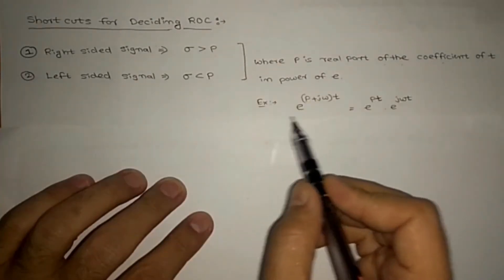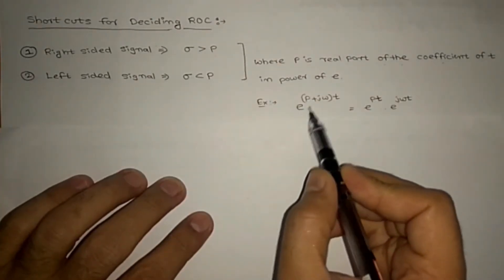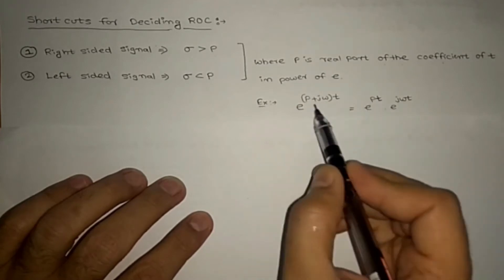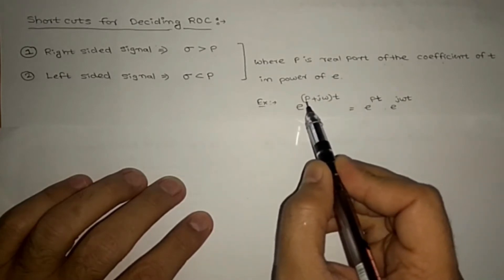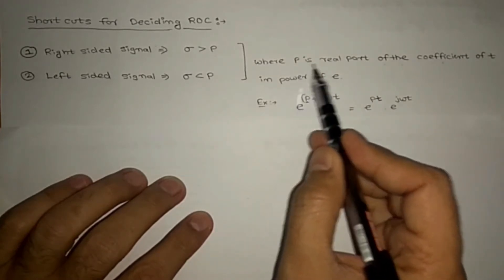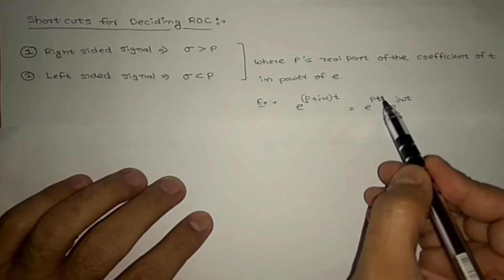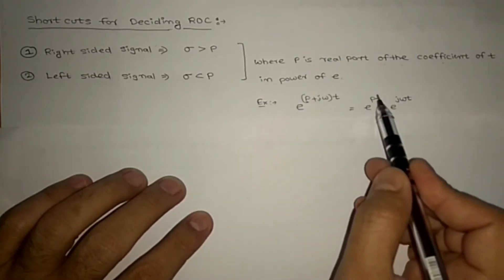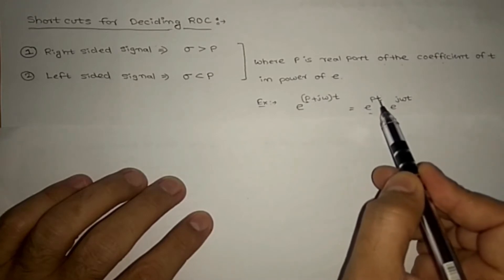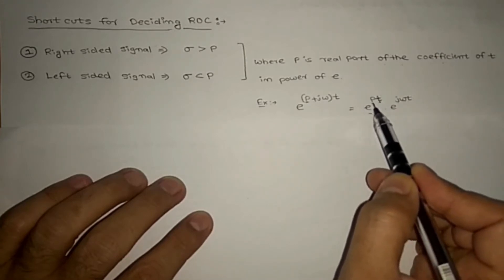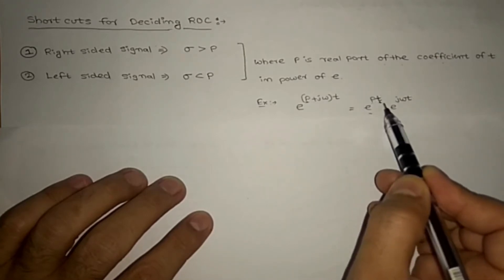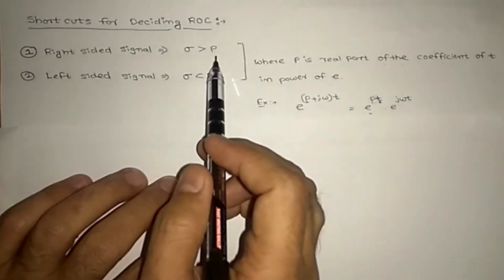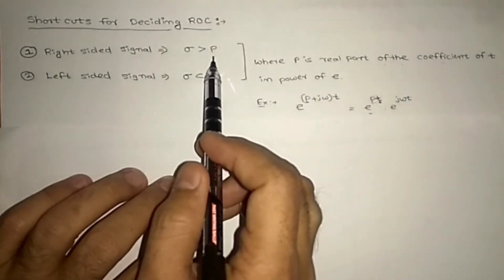For example, if you take e^(p + jω)t, here e^(pt) — p is the real part of the coefficient of t in the power of e. So this p is what we want the real part of, and you need to use this p for drawing the ROC.